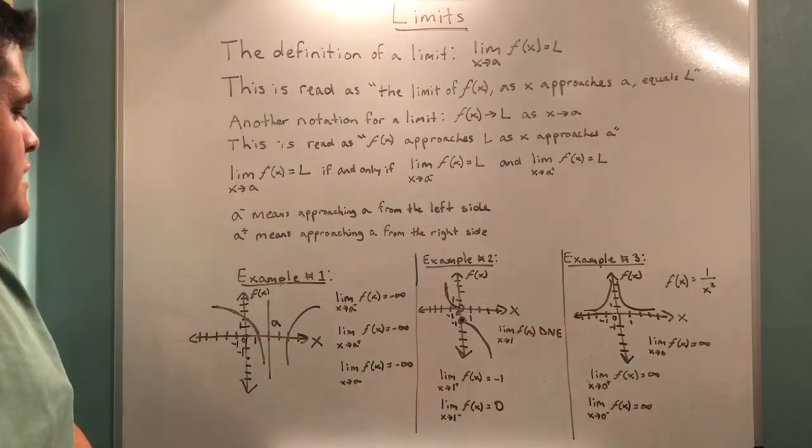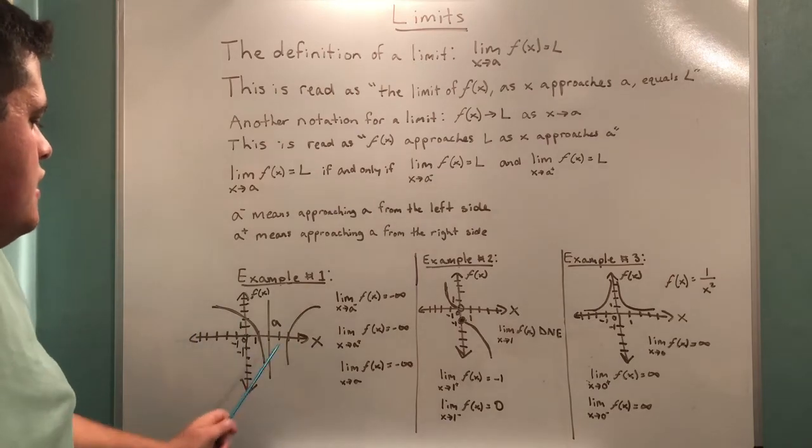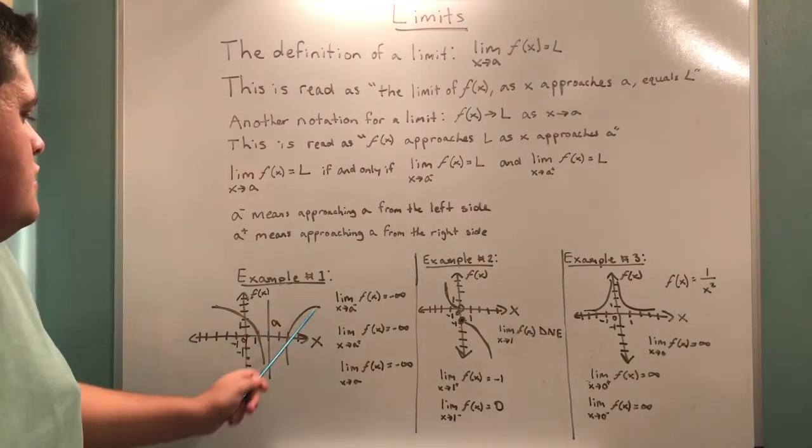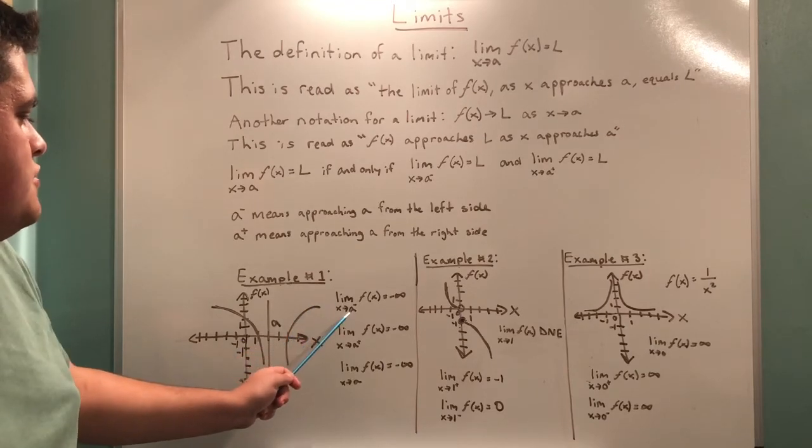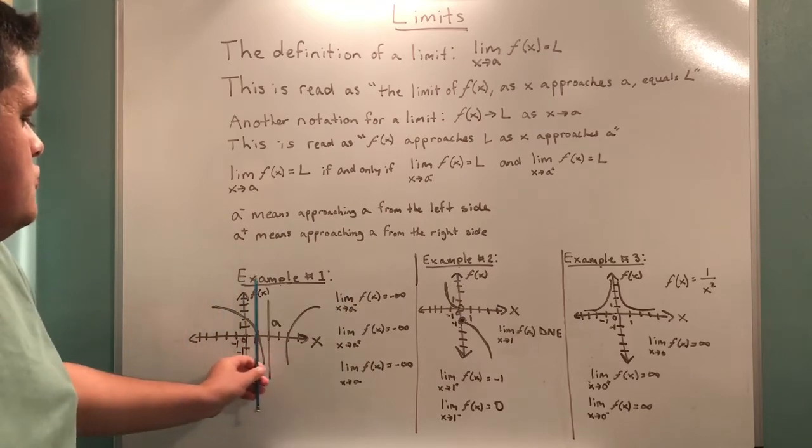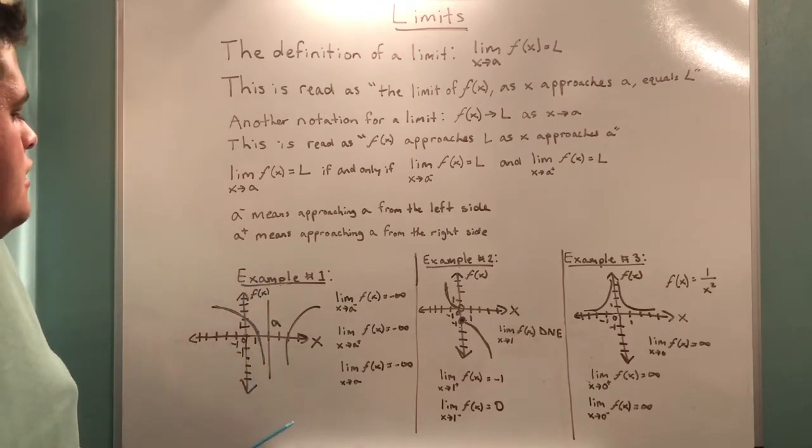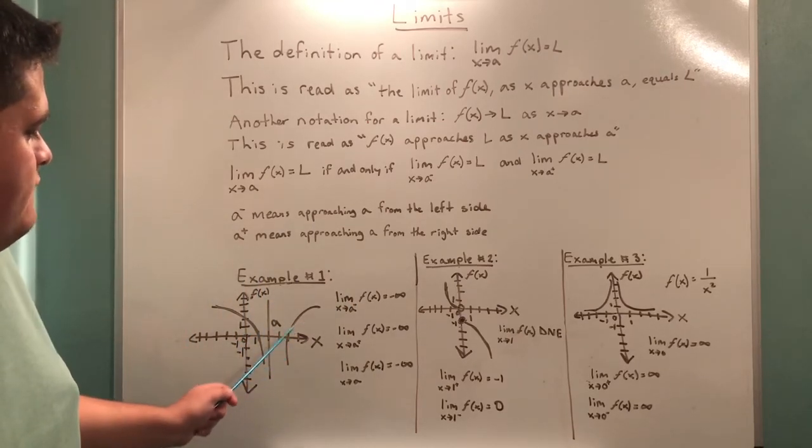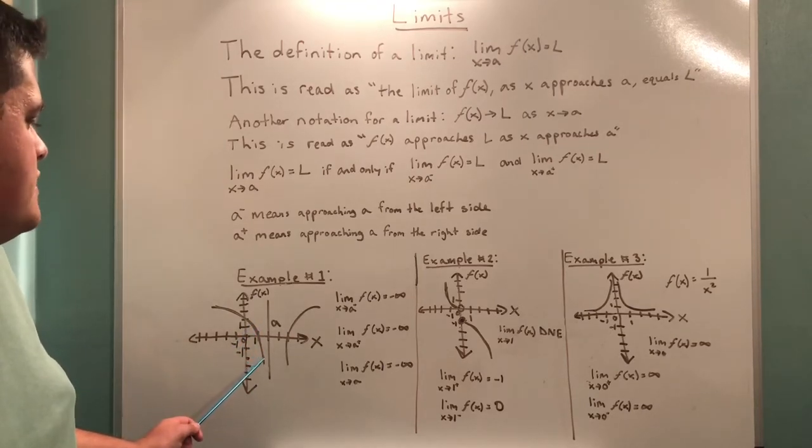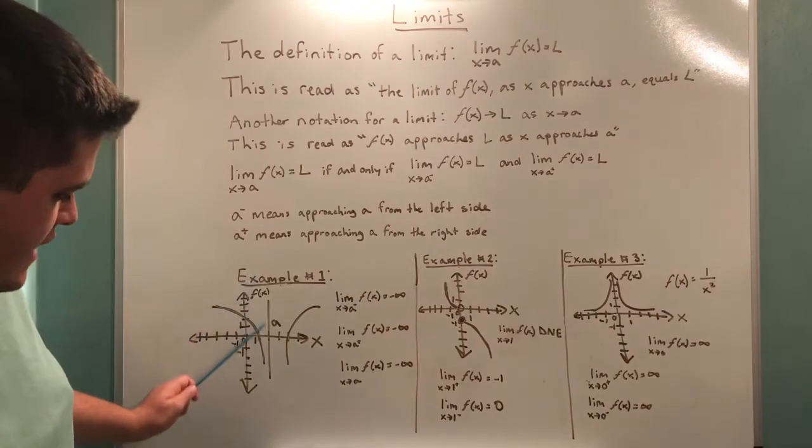So for our first example, we have two curves and a vertical asymptote called a. So the limit as x approaches a from the left. We start left and work our way right towards a. However, since a is a vertical asymptote, we do not get a finite number. Instead, we find that it goes towards negative infinity.